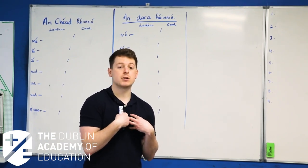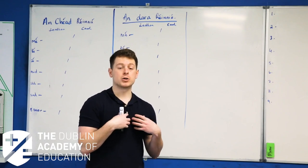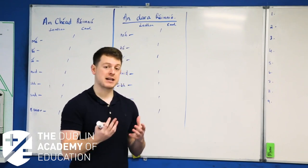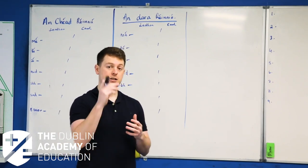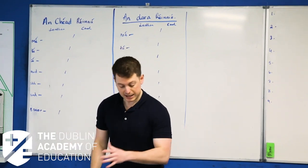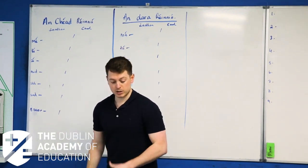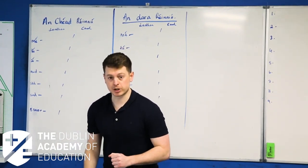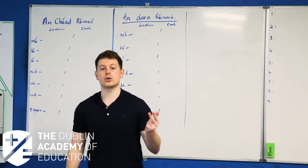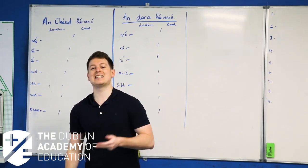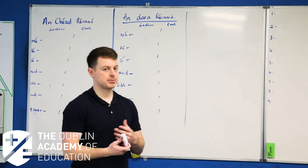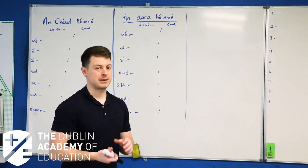So when it's me, it's cuirim — I put. Or if it's I leave, fág, fágaim, A-I-M. So it depends on the person who's talking, what ending we put in. And then we've got two-syllable verbs: críochnaigh, dúisigh, oscail, inis, imirt, tiomáin. Two-syllable verbs and we're going to have a look at them in a minute.